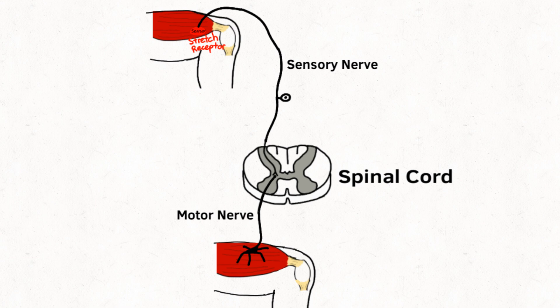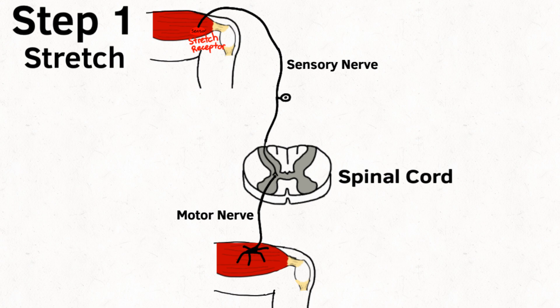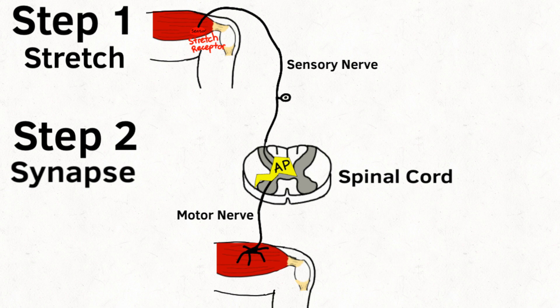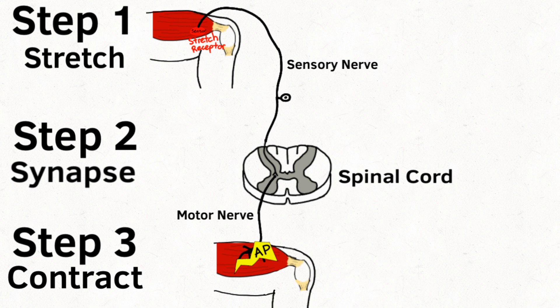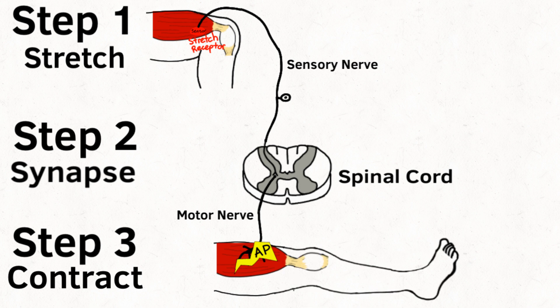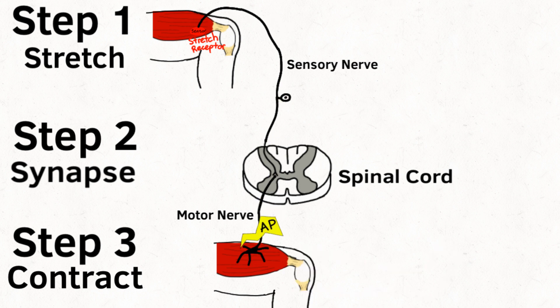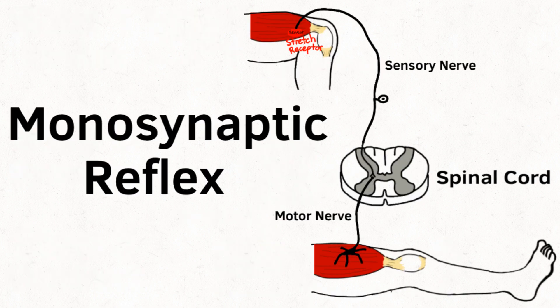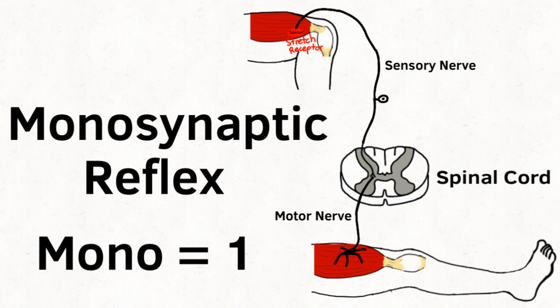Let's review what happened. First, the stretch receptor was activated. Action potential was generated and traveled down the sensory nerve. Second, the action potential had to cross the synapse, located in the spinal cord, then travel down the motor nerve to arrive back at the muscle and make it contract. The example shown here of a knee-jerk reflex is called a monosynaptic reflex, otherwise known as a simple reflex, since mono means one.